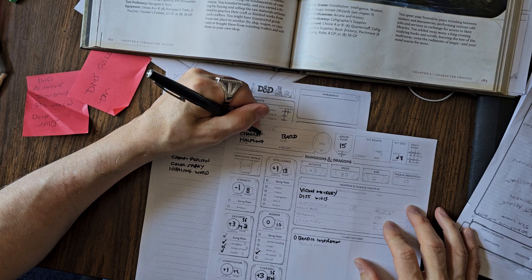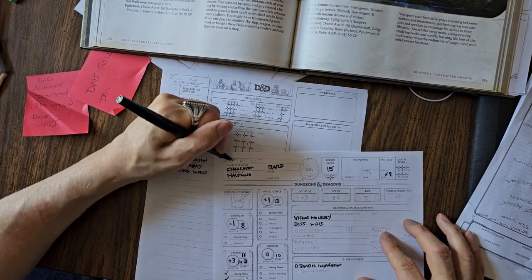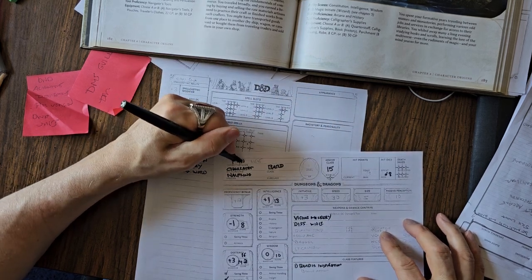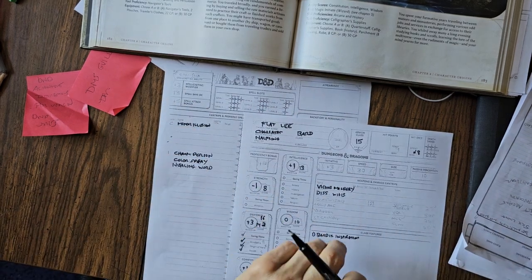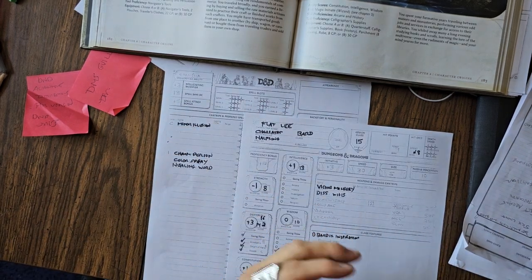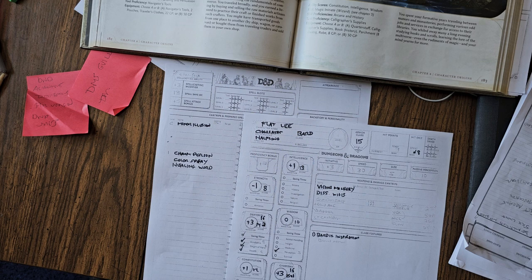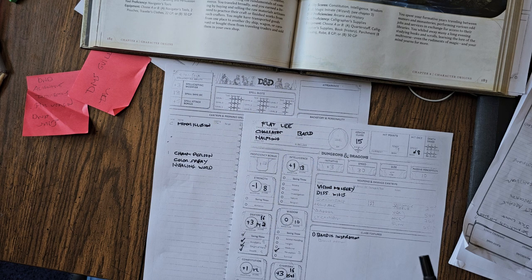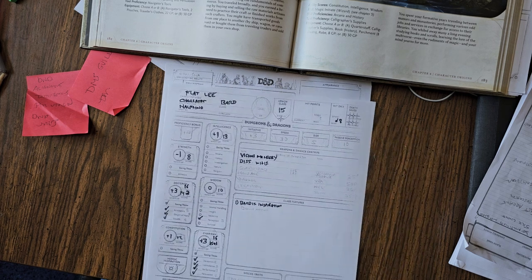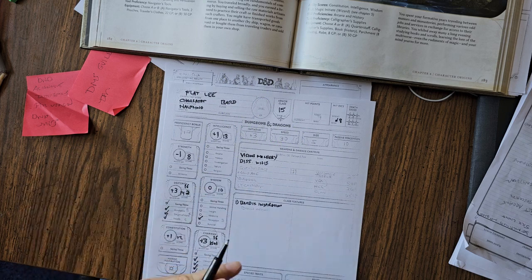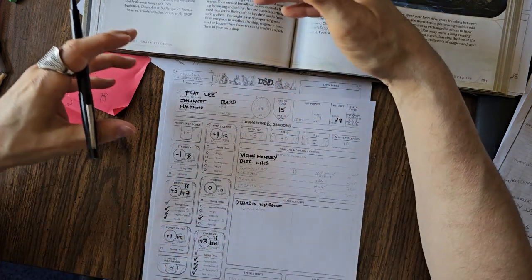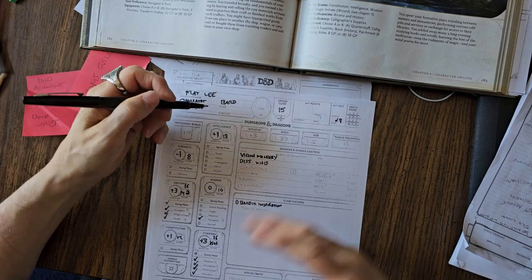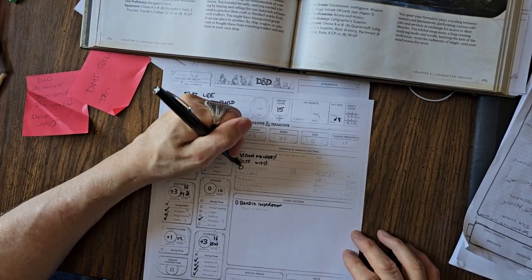I made the name of this character Flat Lee. If you get the reference to that, put it in the comments below because I'd love to see if anybody gets that kind of inside joke. The other thing I did was - you get starting gold. I decided to buy my own weapons. So I bought a quarterstaff.